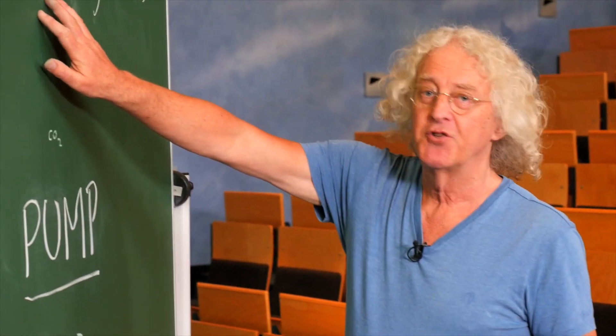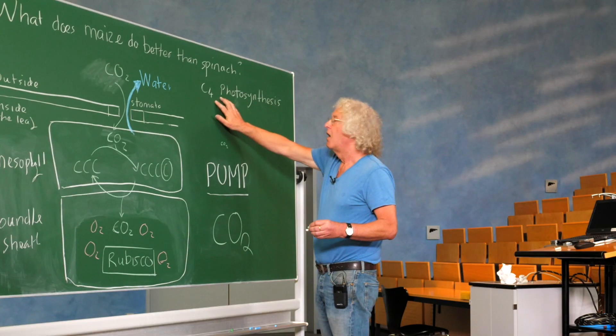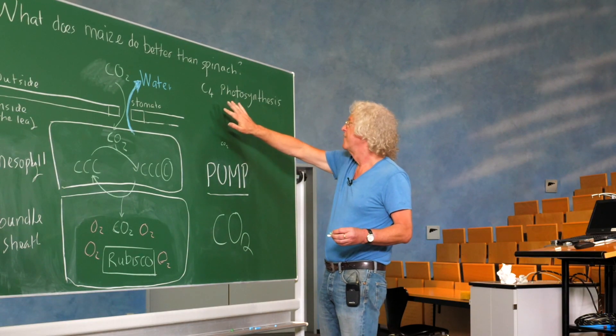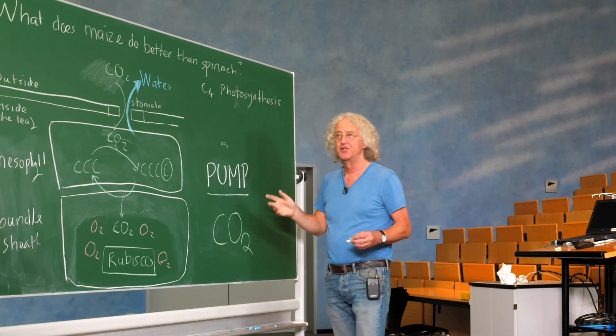The plants which carry out C4 photosynthesis are very important, especially in the tropics and subtropics. For example, all of the large grasslands, the savannah.